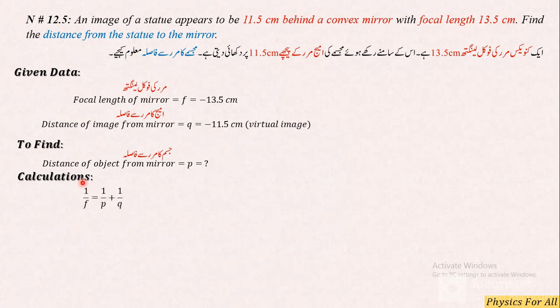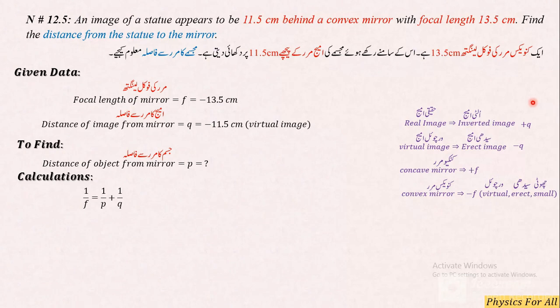Tumhare paas mirror formula: 1 over f is equal to 1 over p plus 1 over q. In ko hum saamne rakhte hain aur isko solve karenge. Ab dekh sakte hain yahan pe convex mirror hai to focal length negative, aur virtual image hai to q ki value bhi negative. To yahan pe hum ne p calculate karna hai.